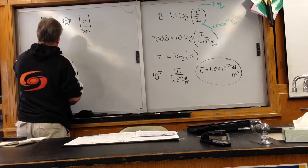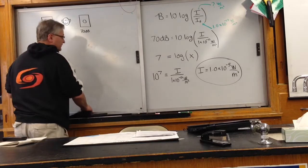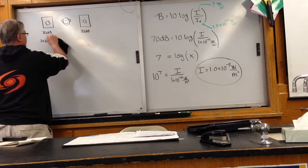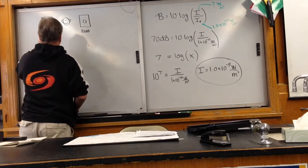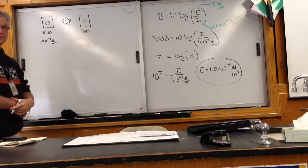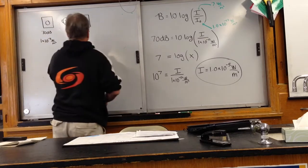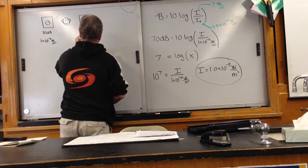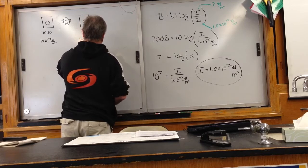So we know from our previous problem that 1 times 10 to the minus 5 watts per meter squared are the same thing as 70 decibels, and this speaker over here is 1 times 10 to the minus 5 watts per meter squared.